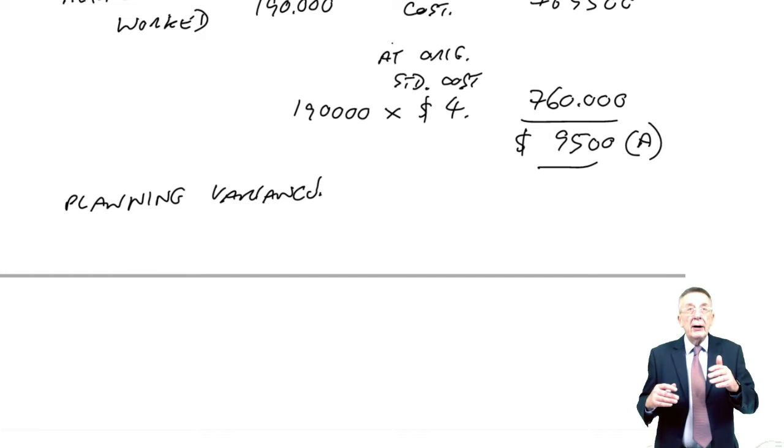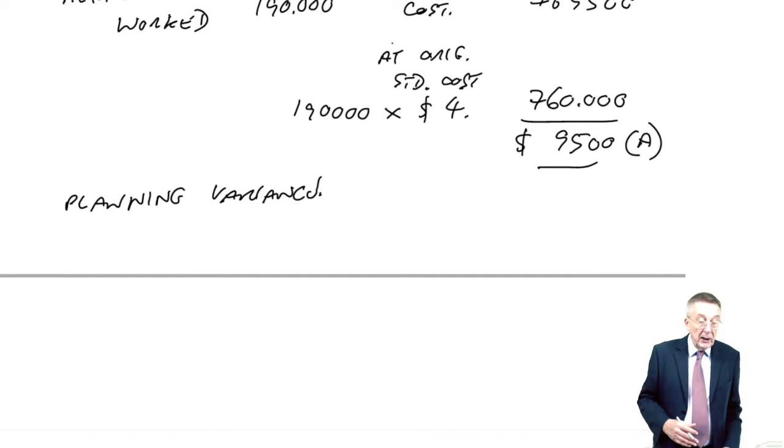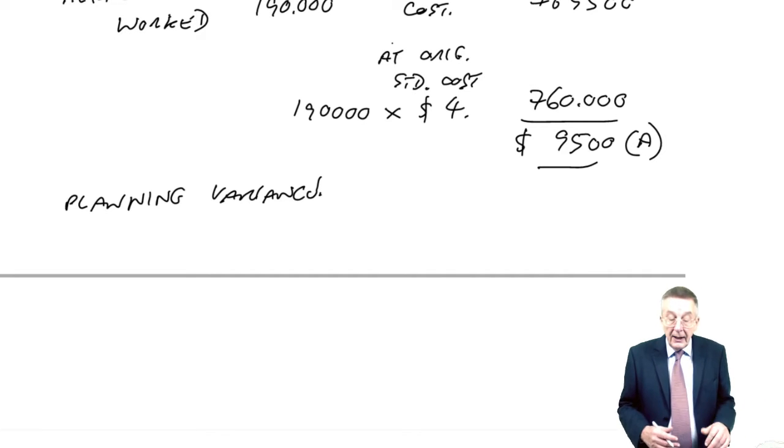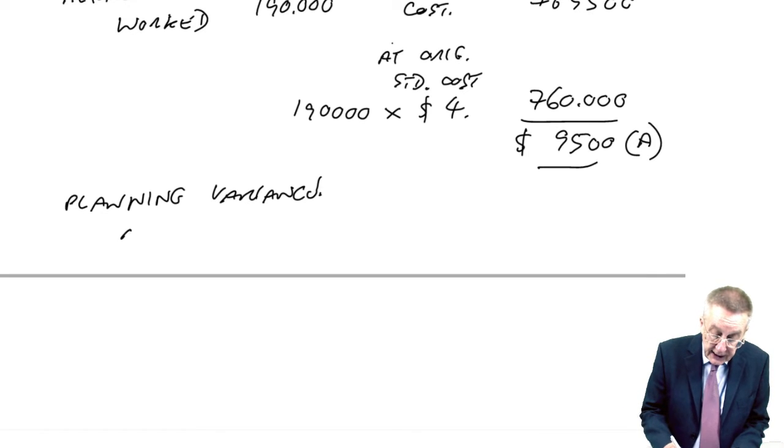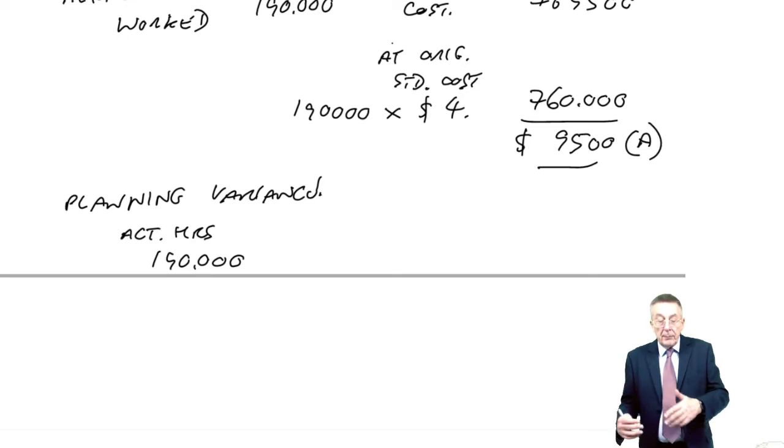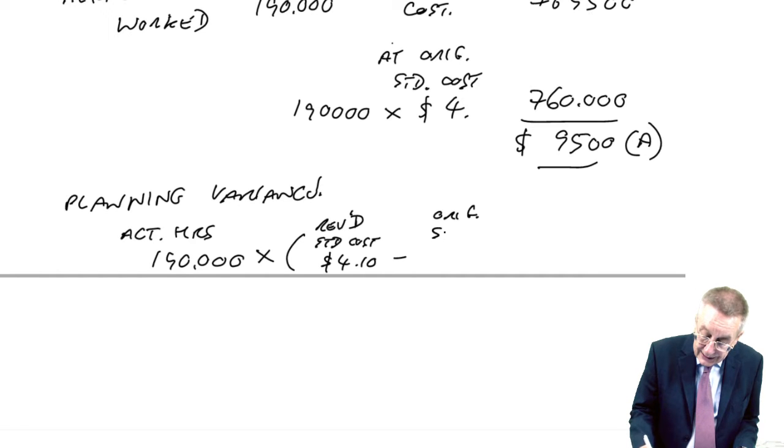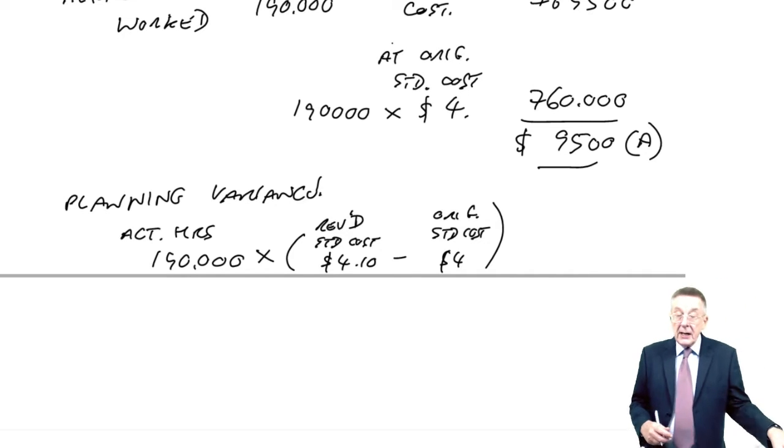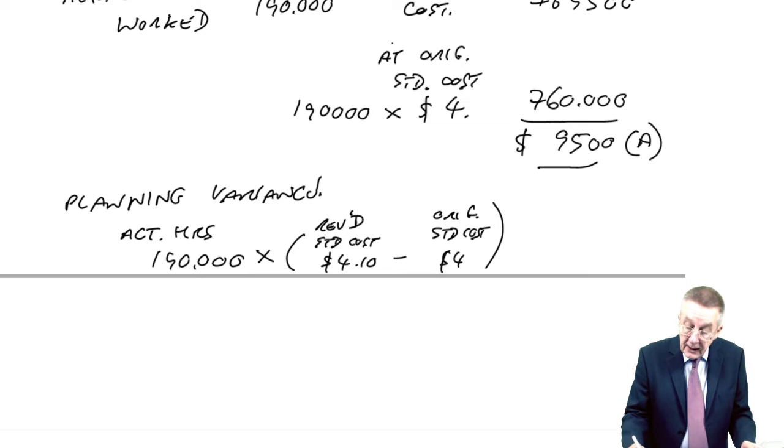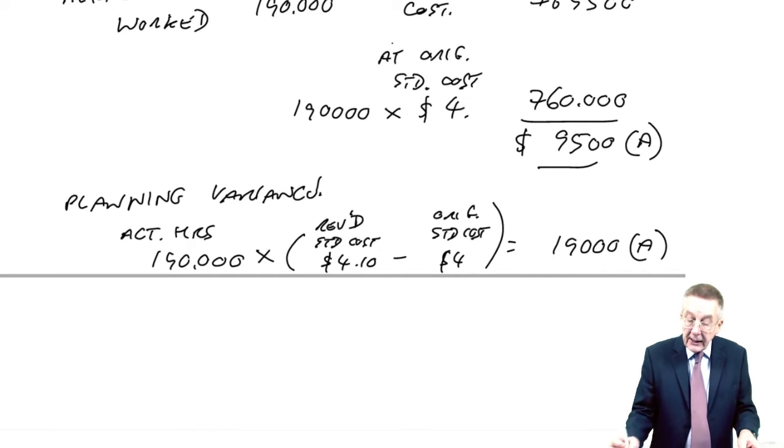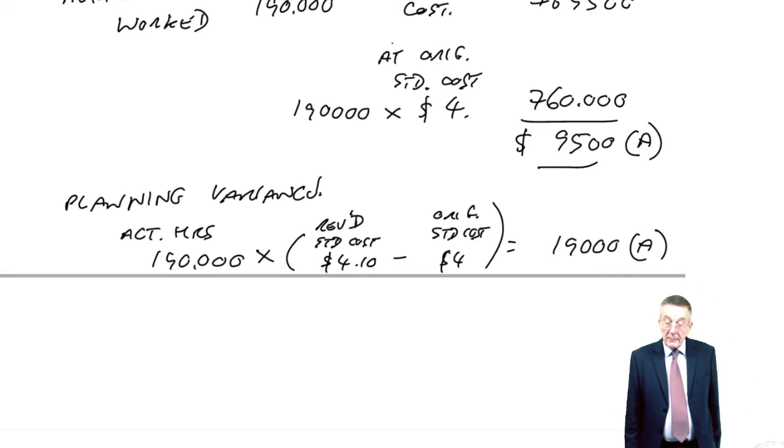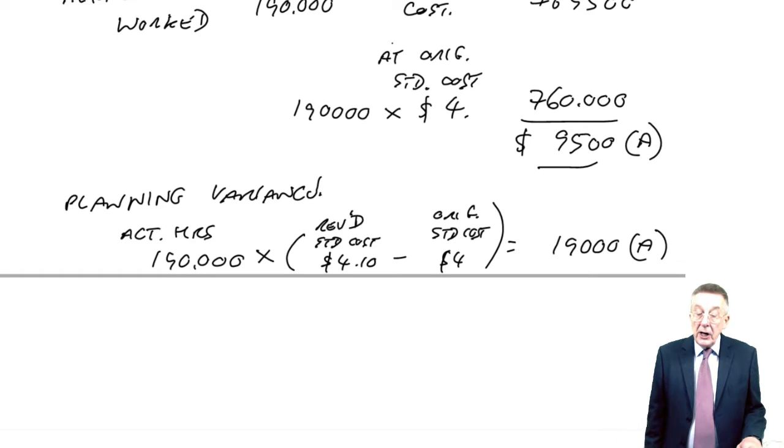Just like in the previous example for the planning, we're comparing the revised cost per hour with the original standard cost. So here I can now write it shorter because always it's the actual hours. So the actual hours, 190,000. Instead of writing the two totals separately, surely we're looking at the difference between the revised standard cost of $4.10 and the original standard cost of $4.00. So our standard cost that has been revised, 10 cents higher. So in total, 19,000. We expect to spend 19,000 more.